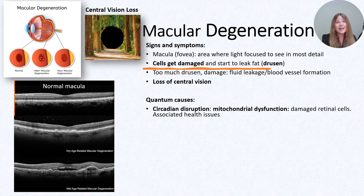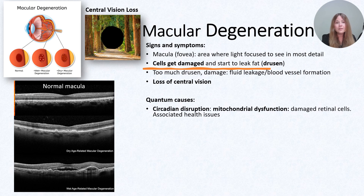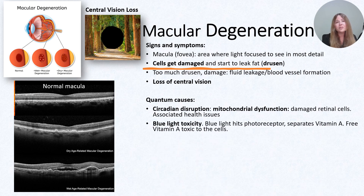The macula doesn't have any blood vessels, so it gets its blood supply from the choroid. The choroid is a really dense vascular layer underneath the retina, and you can see it in the OCT. Mitochondrial dysfunction will also contribute to health issues that affect cardiovascular function and oxygen flow. So macular degeneration tends to be worse in people with inflammatory conditions and cardiovascular disease.